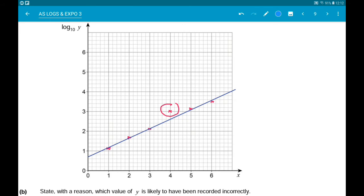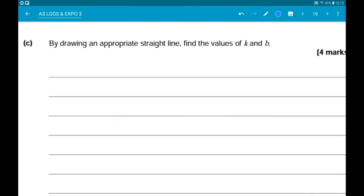Now this line is not of the form y equals mx plus c. It's log10y equals mx plus c. So we need to transform the model into log10y equals. So we know y is equal to kb to the power x.